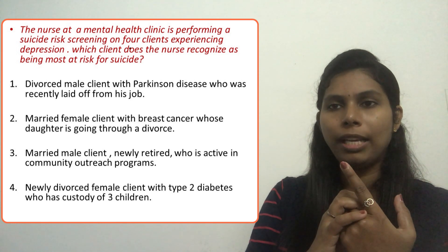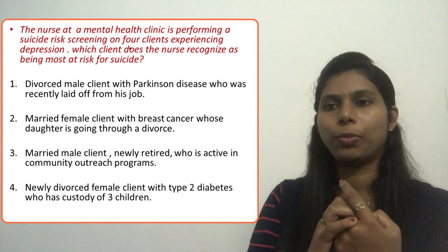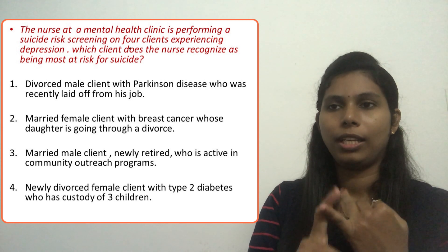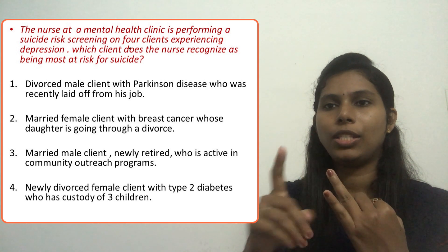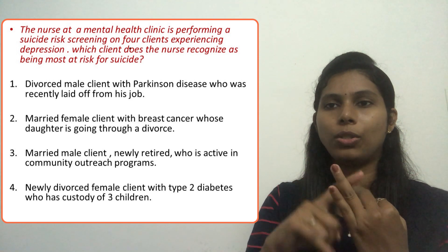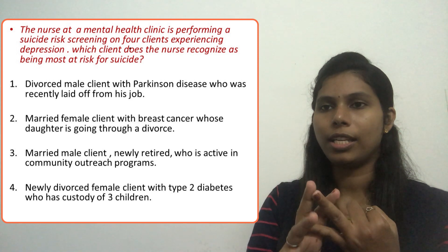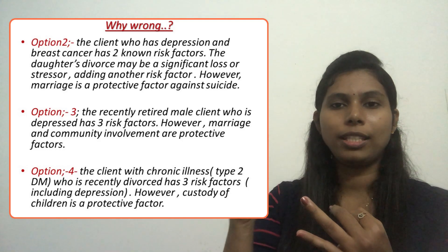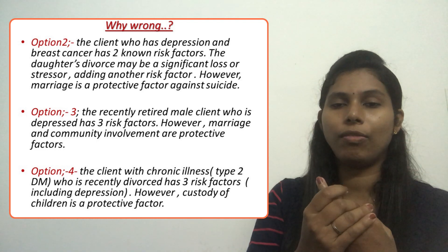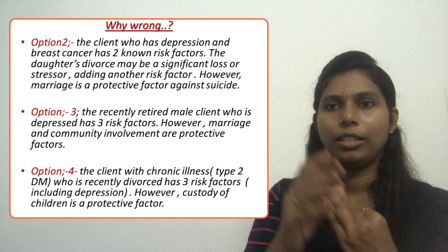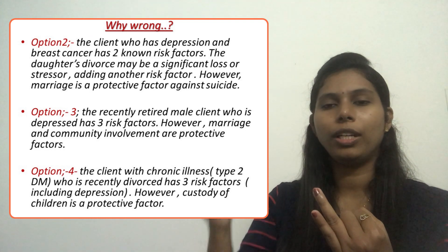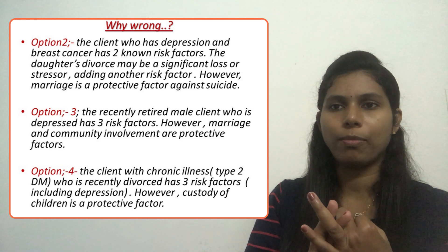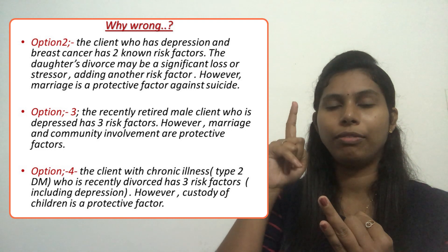Option three — the married male client, newly retired, active in community outreach programs: the first risk factor is newly retired, and the second is depression. That gives only two risk factors. However, there is a positive protective factor — he is very active in community outreach programs, which can decrease the severity of his risk. We can likely eliminate option three since it has fewer risk factors and a positive protective factor.